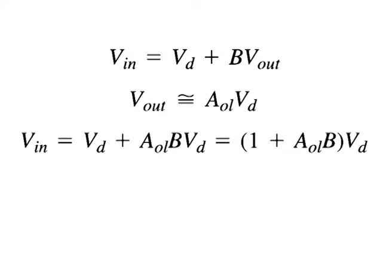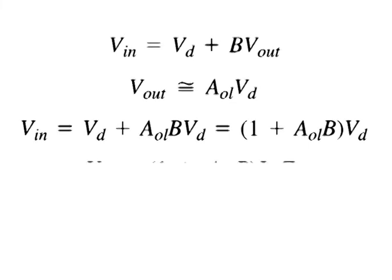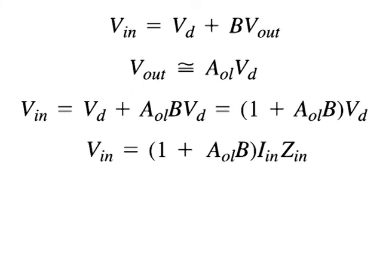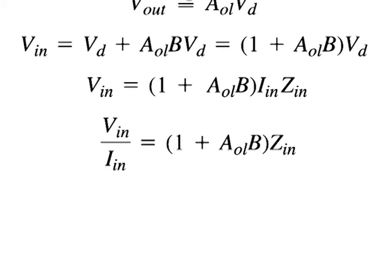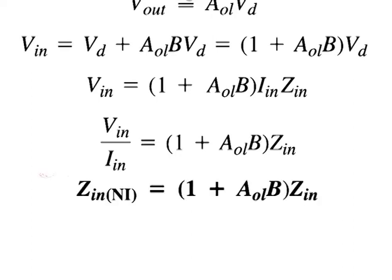Substituting Iin times Zin for Vd, Vin becomes 1 plus B·AOL into Iin into Zin, where Zin is the open loop input impedance of the op-amp without feedback. Transposing, we get Vin over Iin equals 1 plus B·AOL into Zin. We know that Vin over Iin is the overall input impedance of the closed-loop non-inverting amplifier, so Zin(NI) equals 1 plus B·AOL into Zin. This shows that the input impedance with negative feedback is much greater than the internal input impedance without feedback.